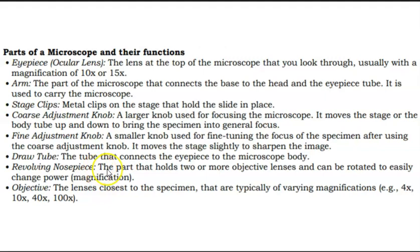The draw tube is the tube that connects the eyepiece to the microscope body. The revolving nosepiece is the part that holds two or more objective lenses and can be rotated to easily change power or magnification. The objective lenses are closest to the specimen and are typically of varying magnifications like 4 times, that's the scanner,